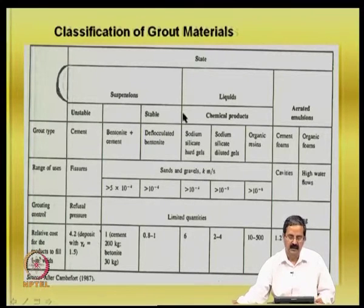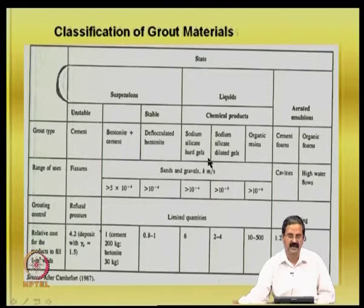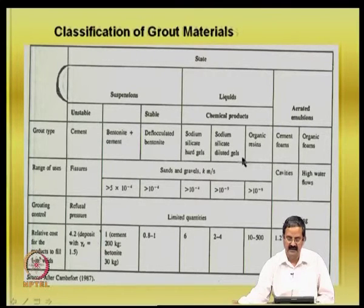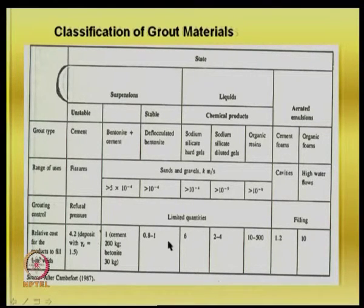Beyond that, when permeability goes to 10^-5 or 10^-6 (clay-type soils), you need to go for chemical products — liquids such as sodium silicate gels or organic resins. These are more expensive compared to a cement 200 kg plus bentonite 30 kg combination. Using cement alone can be expensive, and chemical products are even more expensive. But when the situation demands it — when particle size is not amenable to suspension grouting — chemical products are essential.